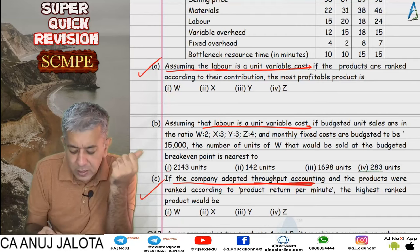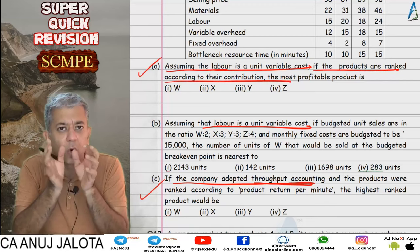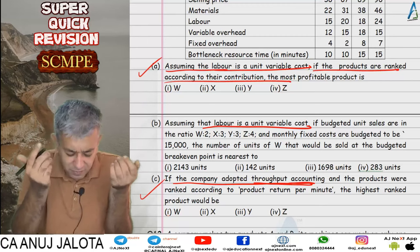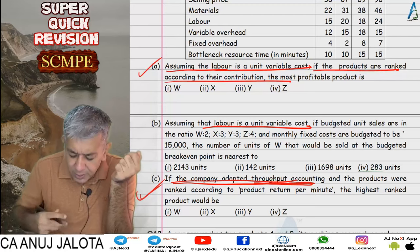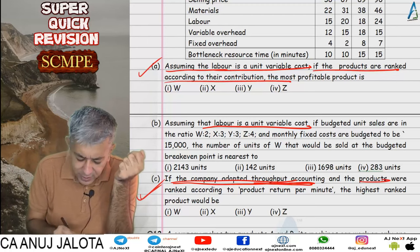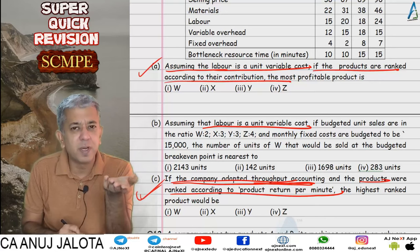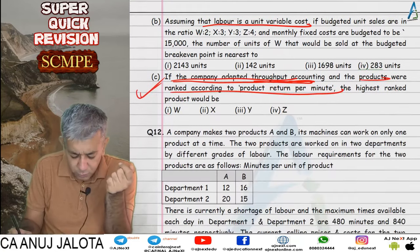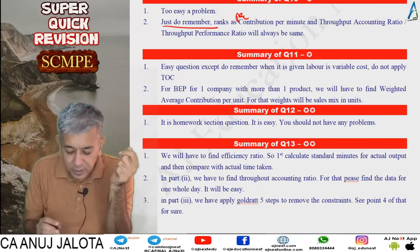Part C: if the company adopted throughput accounting, then material will be the only variable cost. In parts A and C, the task was essentially to find contribution per minute and rank the products accordingly. Part A said assume labor is a variable cost and rank products by contribution. Part C said apply throughput accounting and rank products by return per minute — meaning contribution per minute under throughput accounting.